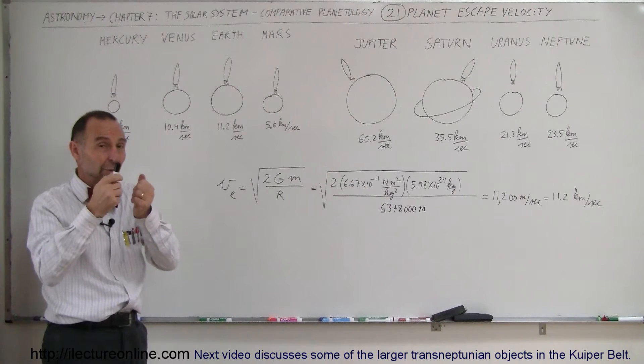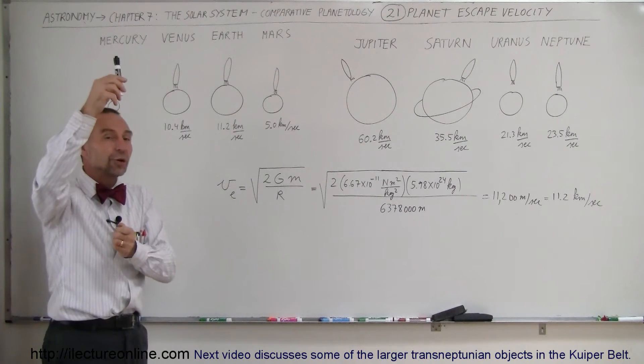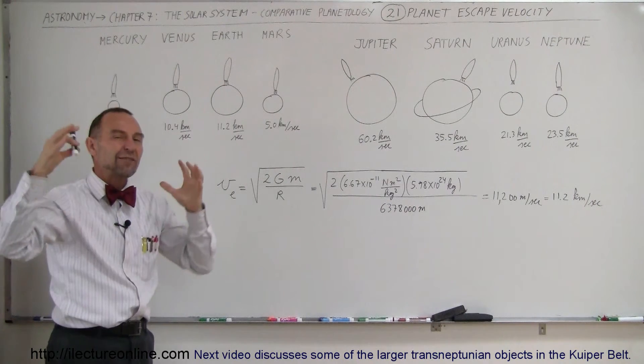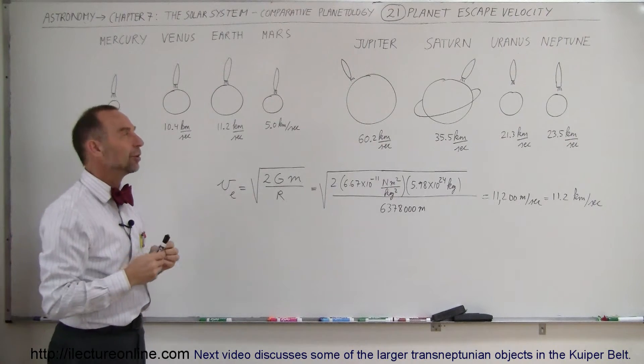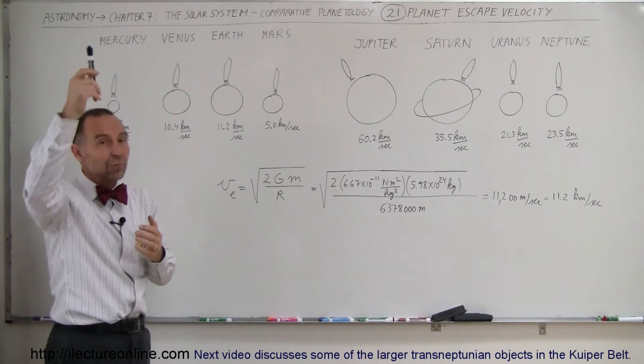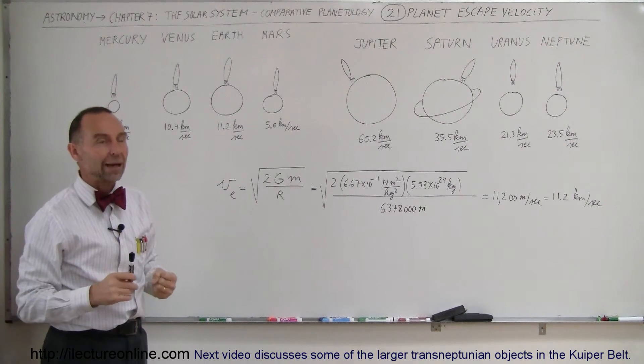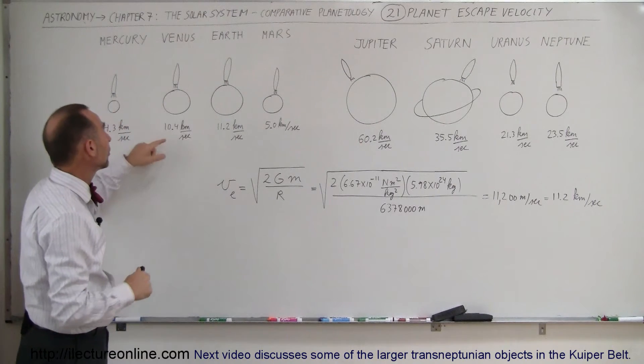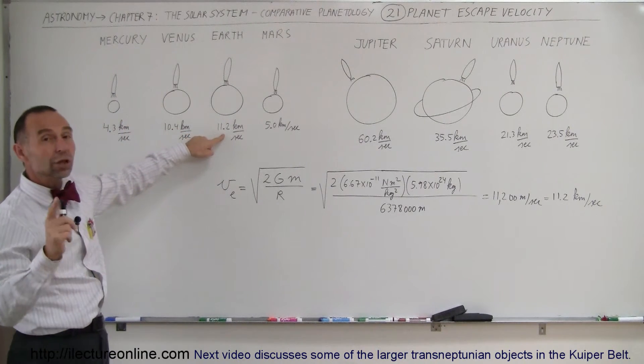The Earth's gravity may slow it down, but it will continue to move forward and away from the gravitational grasp of the Earth, and eventually it will just keep moving away and the Earth can no longer pull it back. What is that minimum speed? For the Earth, it is 11.2 kilometers per second.